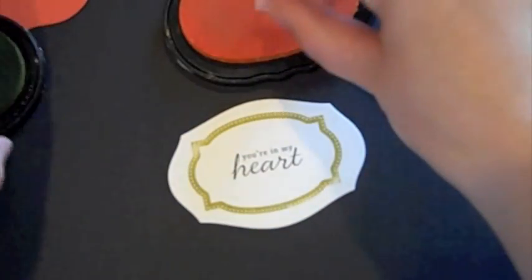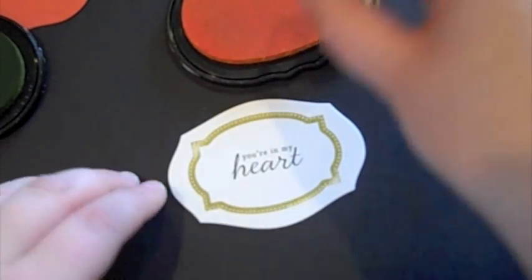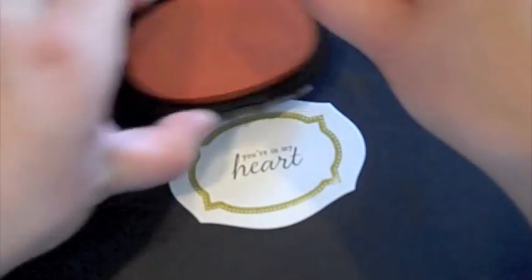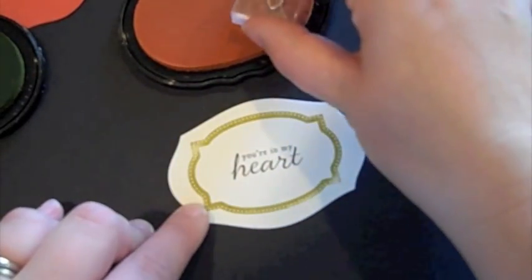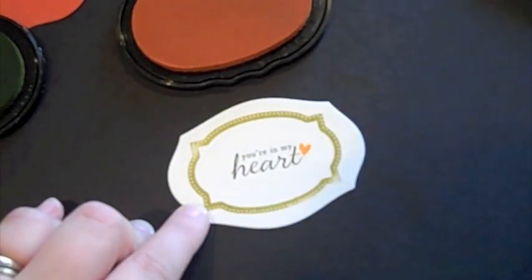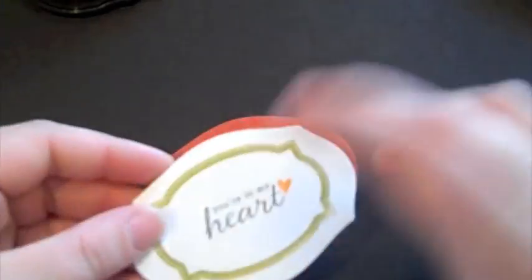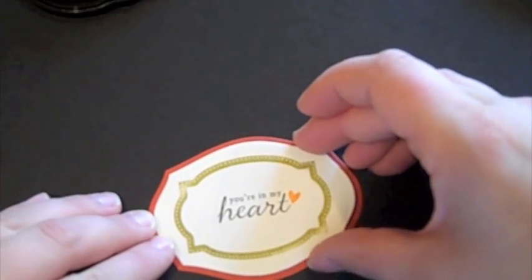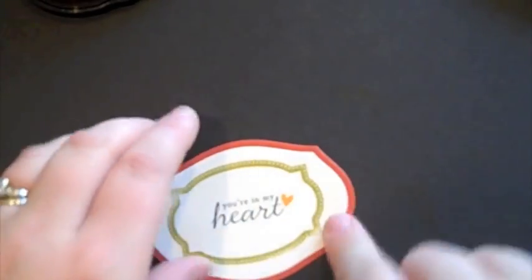And I've got a little heart from Love Lives Here, and I'm adding that in Orange Zest. I actually had the wrong pad there. Orange Zest. Just add that off to the side, just like that. I'm going to adhere this piece to a piece of Terracotta Tile cardstock cut with the Layers Matte Stack 1.